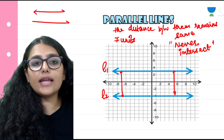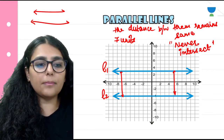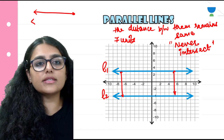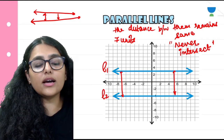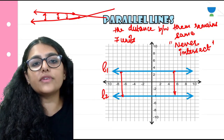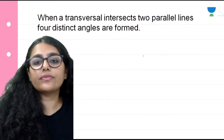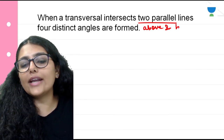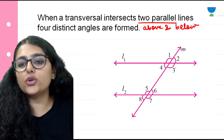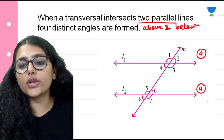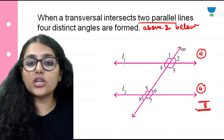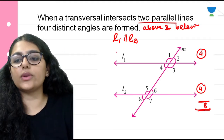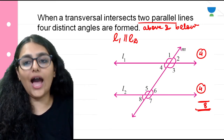Parallel lines continue infinitely. If the distance were not the same, the lines would eventually intersect — the distance would keep decreasing until they cross. But this is not the case with parallel lines. When a transversal intersects two parallel lines, four distinct angles are formed above and four below at the two different intersection points — a total of 8 angles. Now we will see the relationship between these 8 angles.